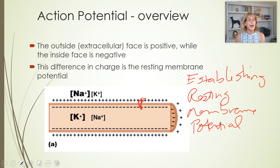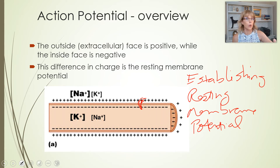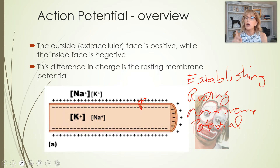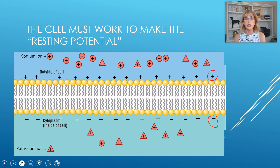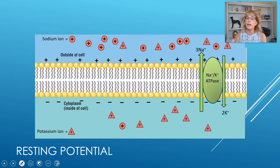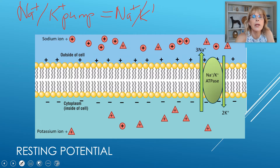That is not the way those ions wanted to move — sodium wants to go inside, potassium wants to leave, and the positives want to go where the negatives are. Getting things so wrong is going to take energy, so it requires active transport. Our only active transport protein is the sodium-potassium pump, also called sodium-potassium ATPase, because it uses ATP to make active transport happen.